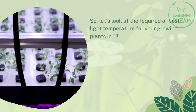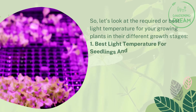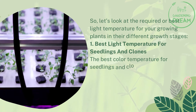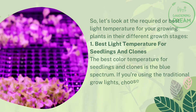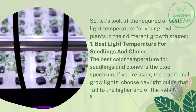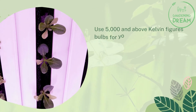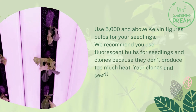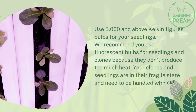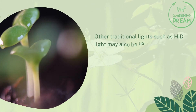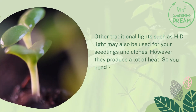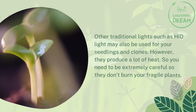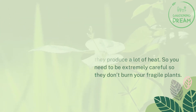Number one: best light temperature for seedlings and clones. The best color temperature for seedlings and clones is the blue spectrum. If you're using traditional grow lights, choose daylight bulbs that fall at the higher end of the Kelvin scale — use 5,000 Kelvin and above. We recommend fluorescent bulbs for seedlings and clones because they don't produce too much heat. Other traditional lights such as HID may also be used, but produce a lot of heat, so be careful not to burn your fragile plants.